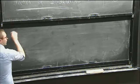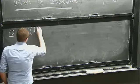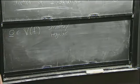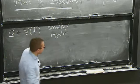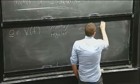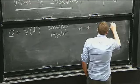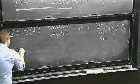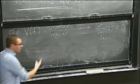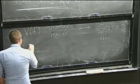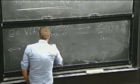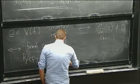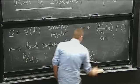So let me say what I mean if I'm working in positive characteristic. We're going to say that the origin is a smooth point, again just mimicking one of the characterizations in characteristic zero here, if and only if the multiplicity is one — or in other words, one of the partial derivatives at the origin is not zero.